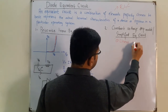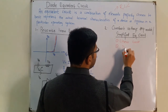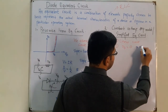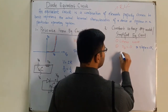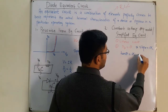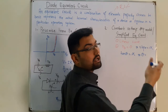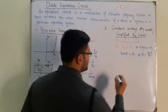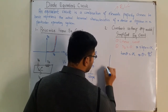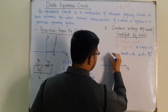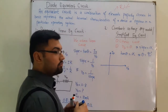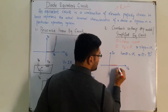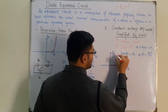Since RD = 0 and RD = 1/slope, the slope becomes infinite. Tangent of theta is infinite, which means theta = 90°. So the curve rises straight up at VB — it comes to the barrier potential and then the current increases vertically.